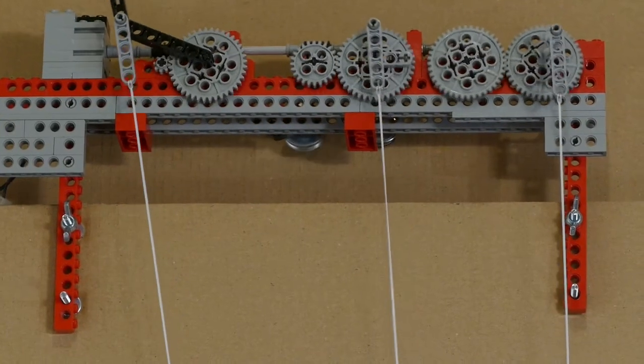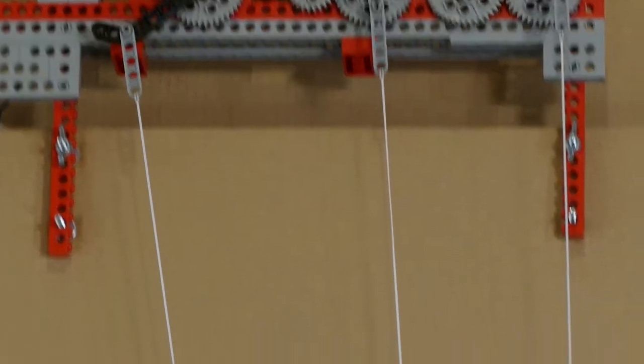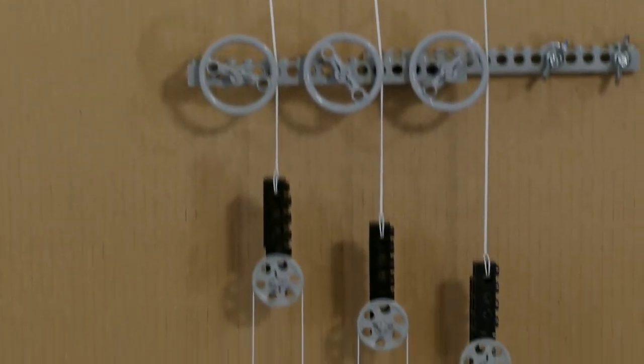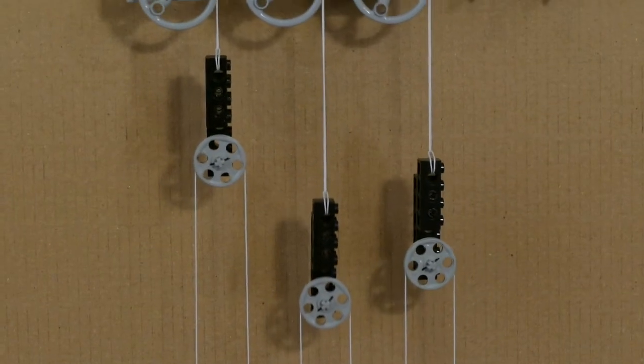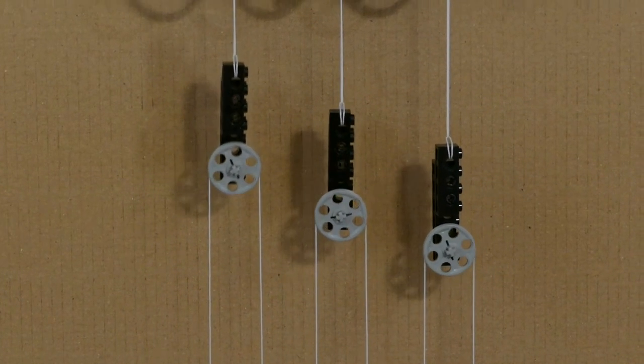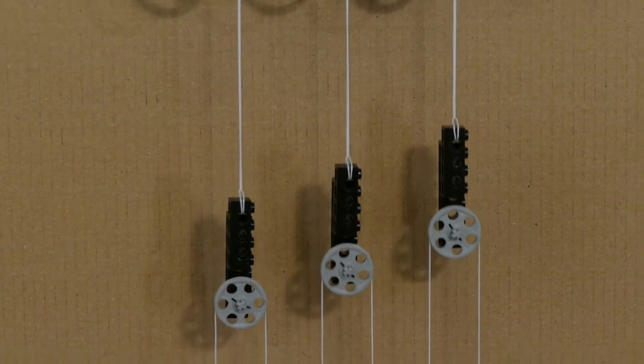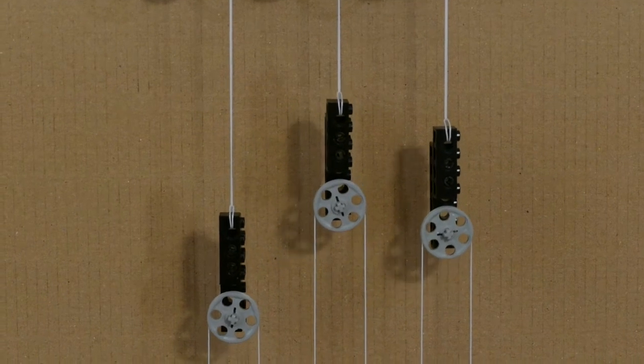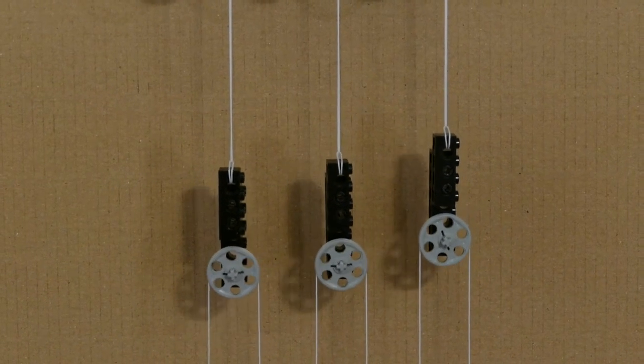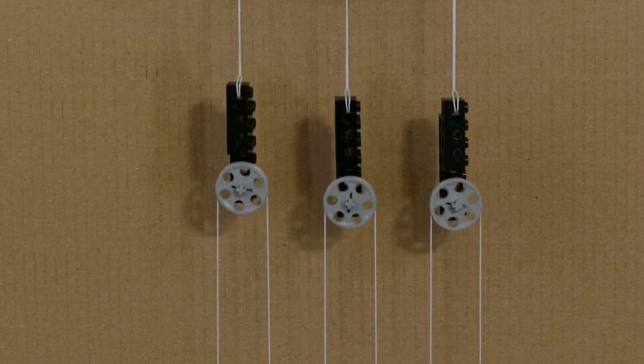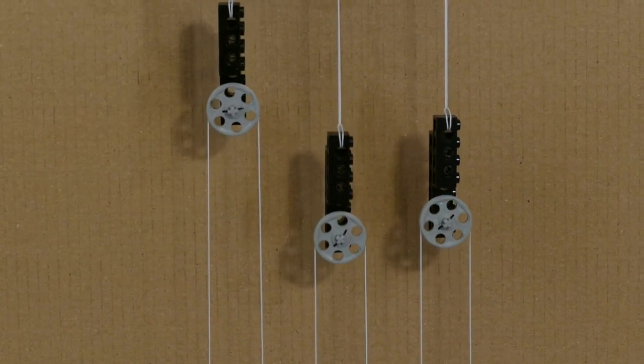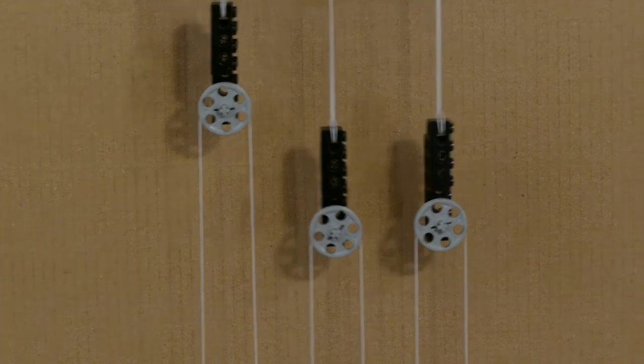So these gears pull strings up and down and the strings pass through guides and then from the strings hang these pulleys that move up and down with simple movements which are very close to being sinusoidal. The one on the left going through a large and slow oscillation, the one in the middle going a third as far but three times as often, and the one on the right a fifth as far and five times as often.